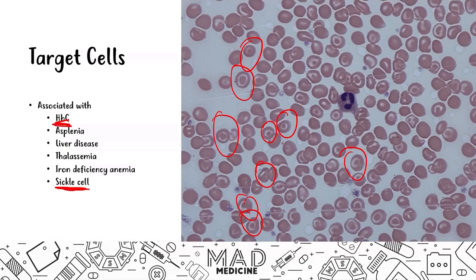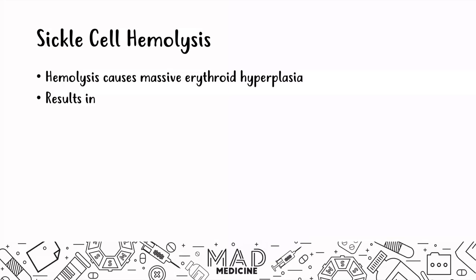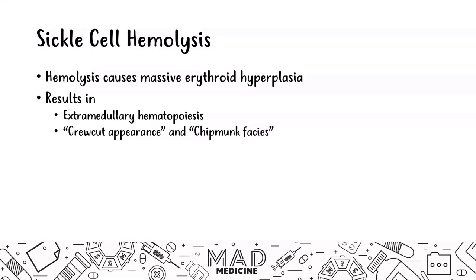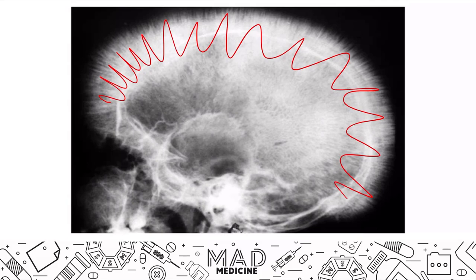For Step 1, if you are given an image with sickling, you know it's sickle cell anemia. If it shows target cells, you cannot conclusively deduce sickle cell anemia since target cells appear in many conditions. This hemolysis leads to massive erythroid hyperplasia. The body overproduces RBC precursors, causing extramedullary hematopoiesis outside the bone, which produces the classic crew cut appearance on skull X-ray and chipmunk facies.